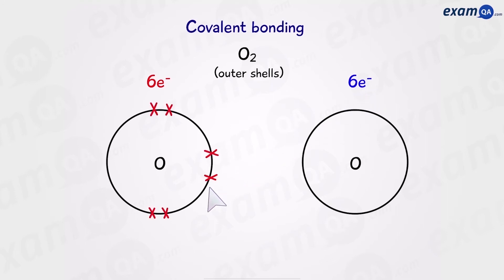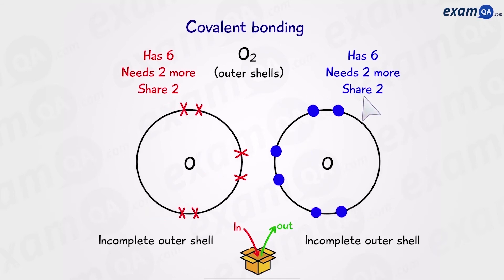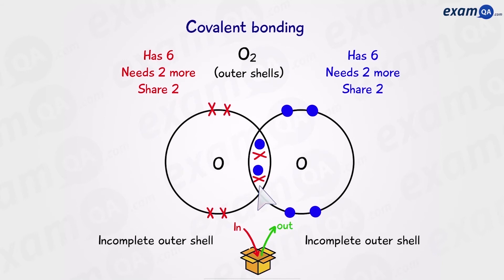So six here and six here. Again, notice that I've drawn them differently on purpose. So these atoms have an incomplete outer shell. They only have six electrons. And the rule with covalent bonding is that you get what you give. Meaning, this atom has six electrons. It needs two more to have eight in its outer shell. And therefore, it has to share two. And the same applies to the one on the right. So they're going to come together and form a covalent bond.